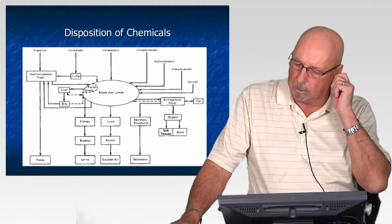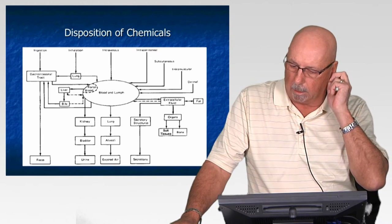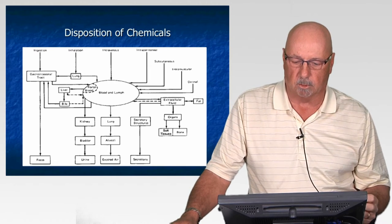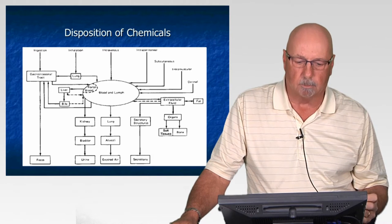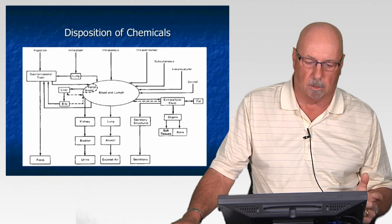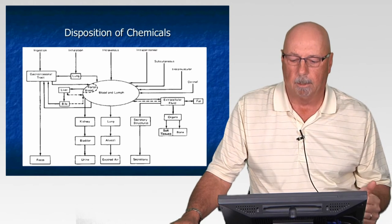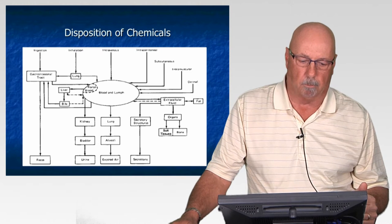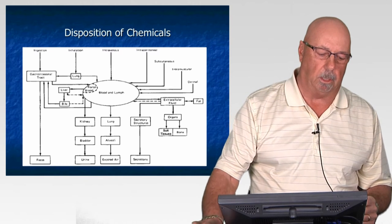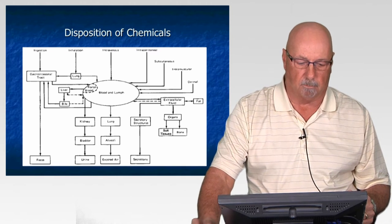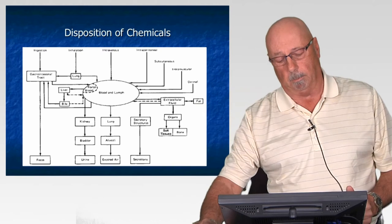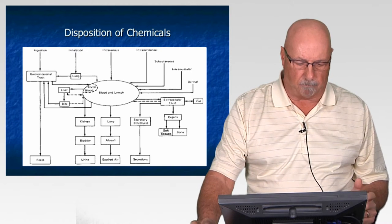When contaminants enter the body through our four routes of entry — ingestion, inhalation, injection, and skin contact — they can do a number of different things depending on how they enter. If it enters through ingestion, the contaminant will go down into the gastrointestinal system and could eventually be excreted through the feces, or it can get into the stomach and be processed through the blood and lymph systems into the liver and transported to other areas of the body.